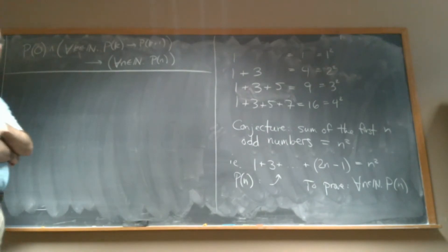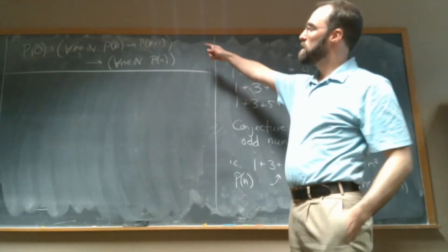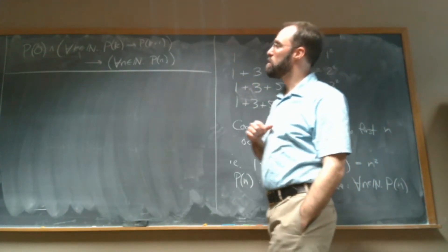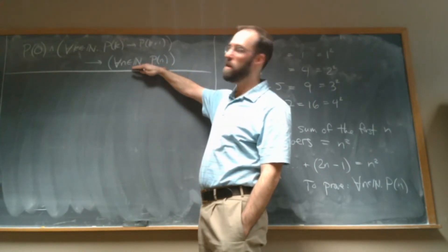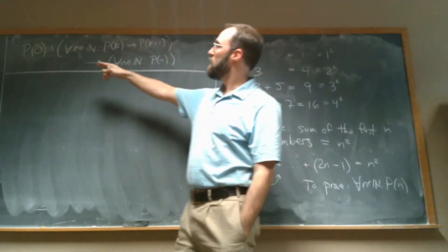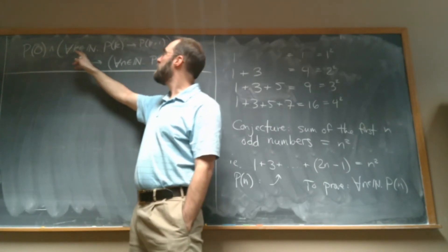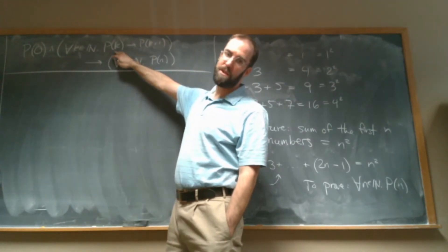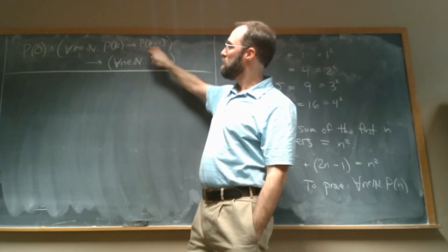I've written up here the formal statement of the principle of induction, right? So we're trying to prove for every natural number n, our proposition P is true for n. And in order to do that, we have two steps we have to do. We have to prove P(0). That's the base case. And then we have to prove that, for any k, if P(k) is true, then P(k+1) is also going to be true.